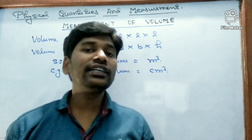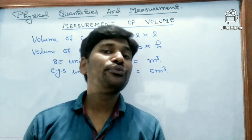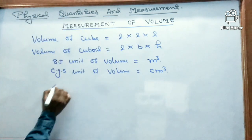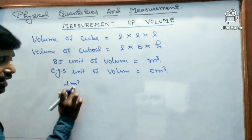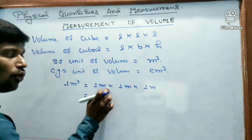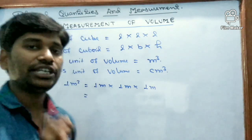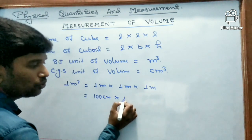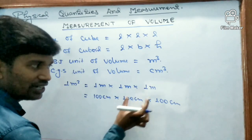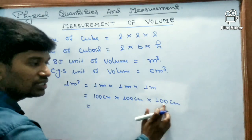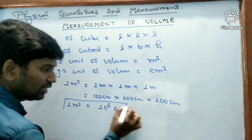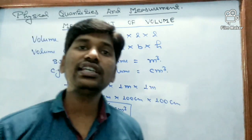Let us see the relationship between different units of volume. First, the relation between meter cube and centimeter cube. One meter cube means one meter × one meter × one meter. Since one meter equals 100 centimeters, that is 100 cm × 100 cm × 100 cm, giving us 10 to the power 6 centimeter cube. So one meter cube equals 10⁶ centimeter cube.